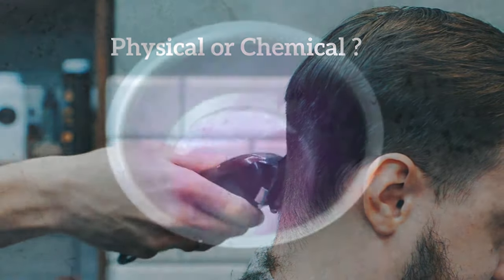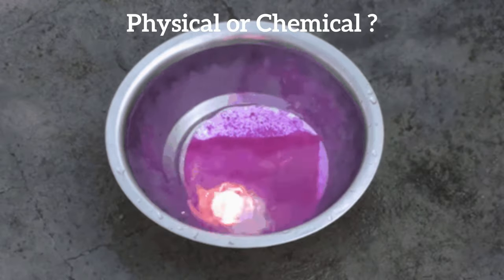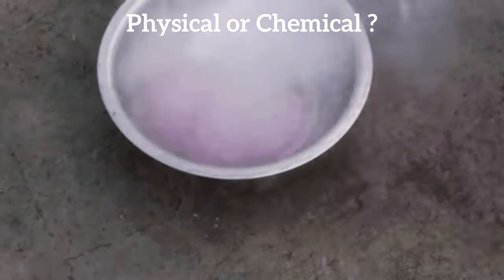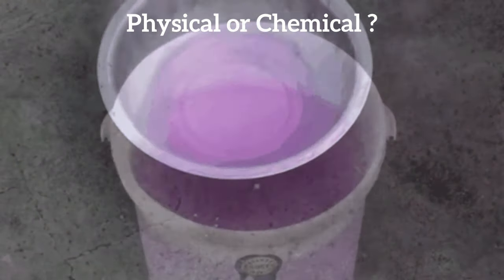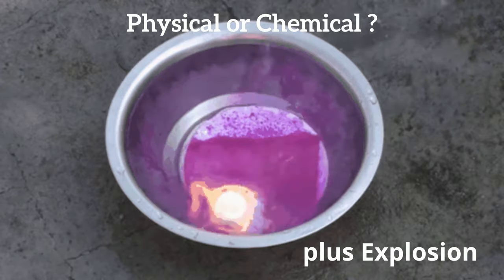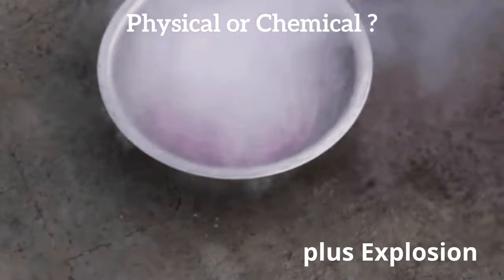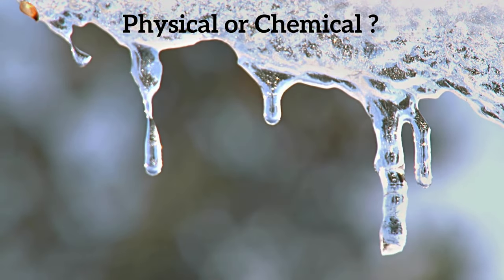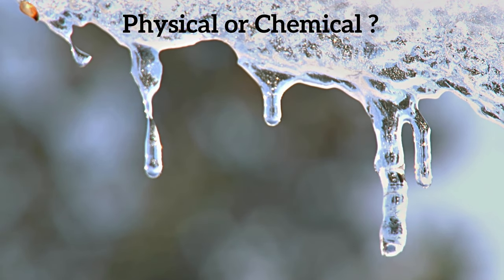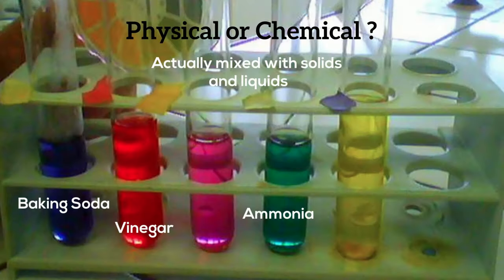This is what happens when you mix sodium and water. The chemical indicators: bubbles, change in temperature, and a change in color. This is a phase change, and all phase changes like from solid to liquid are physical changes. This is a classic chemical change — cabbage juice was mixed with different solids and each substance creates a different color.